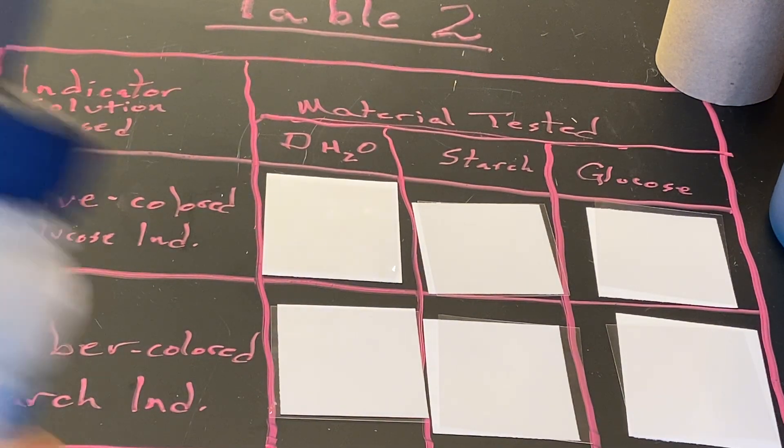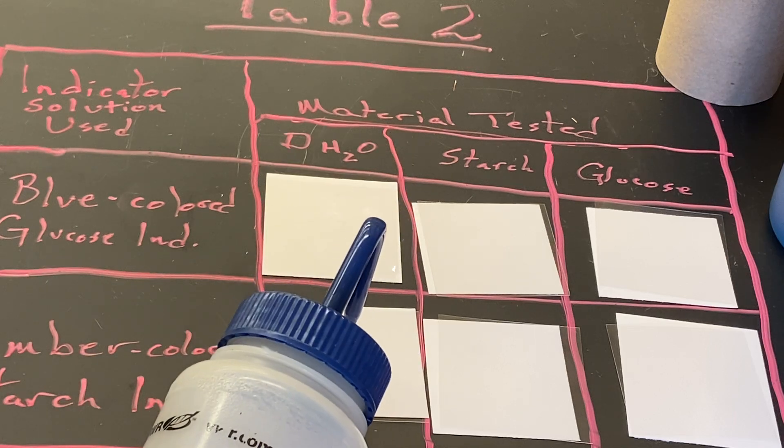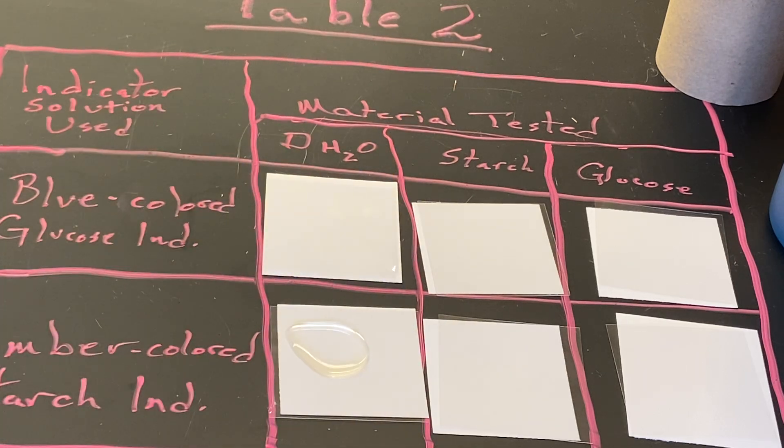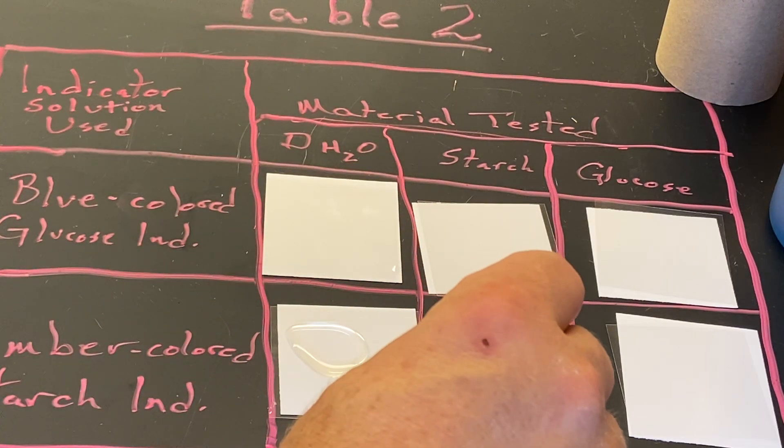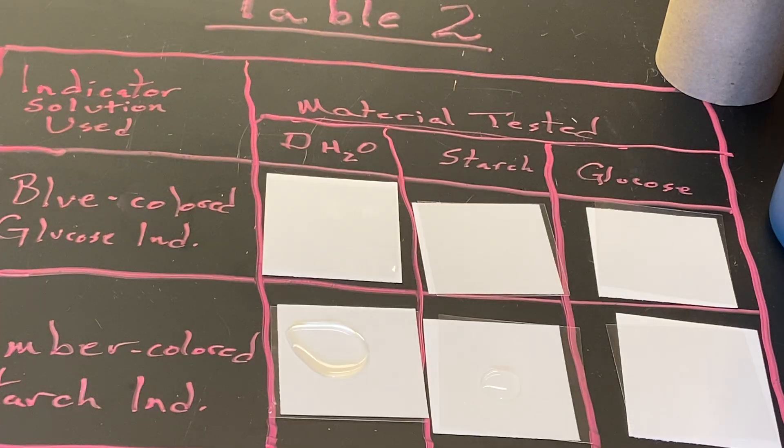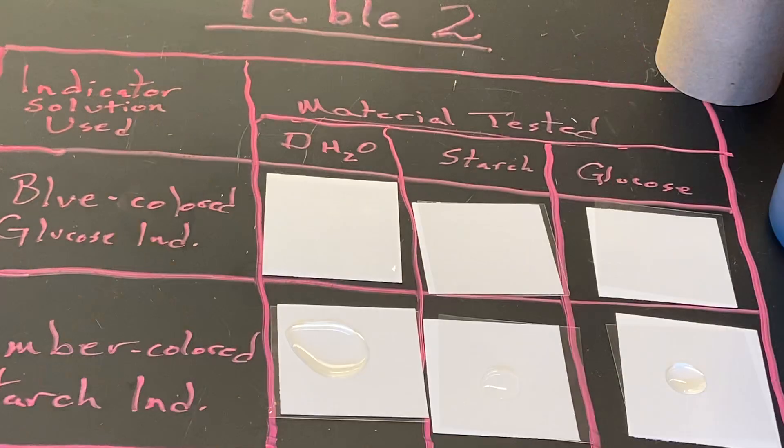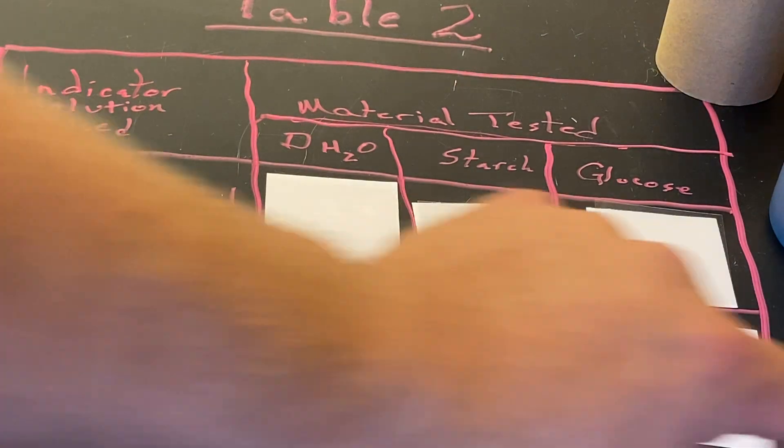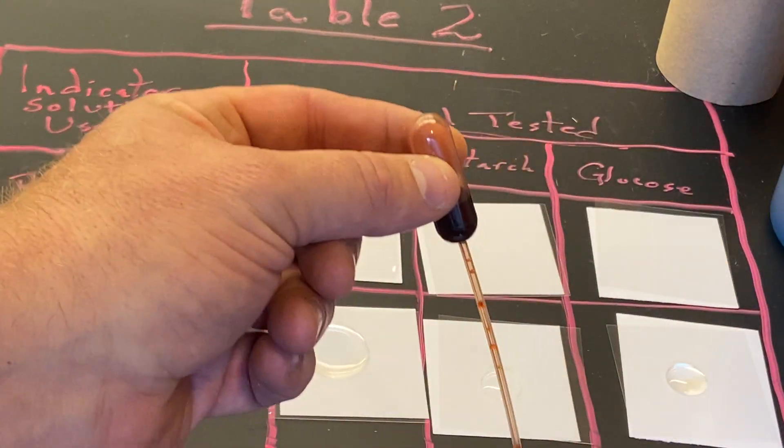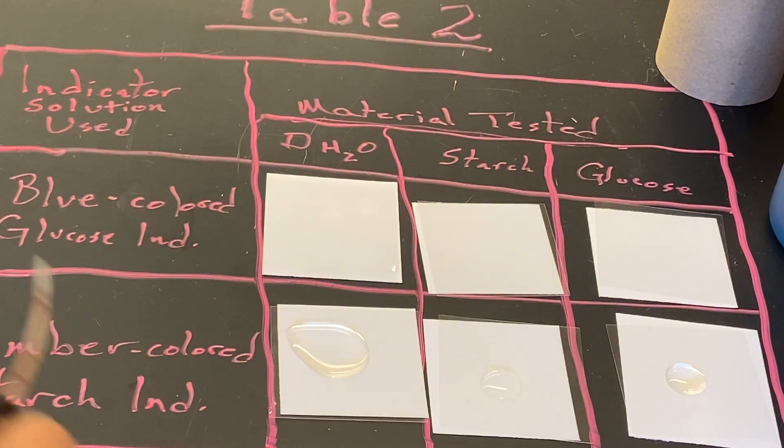I'm going to put some distilled water on the amber colored piece, a little bit of starch—you can kind of see it there, I know it's difficult to see—and then some glucose. Iodine solution is a deep maroon red color. If there is starch present, it will turn the solution black.